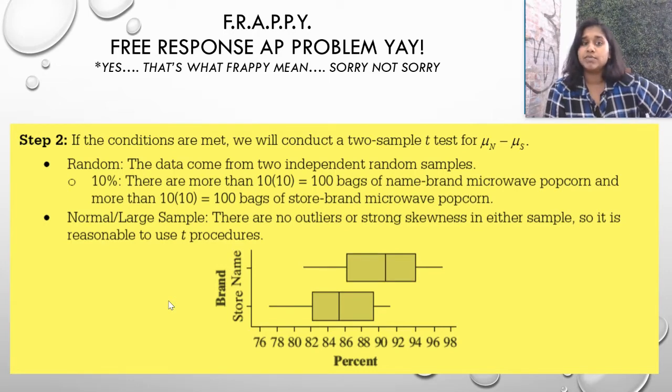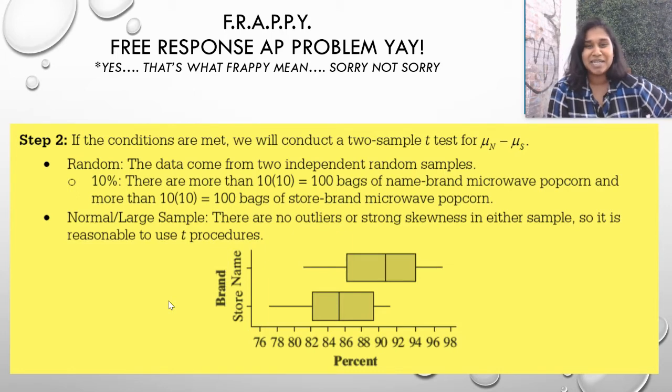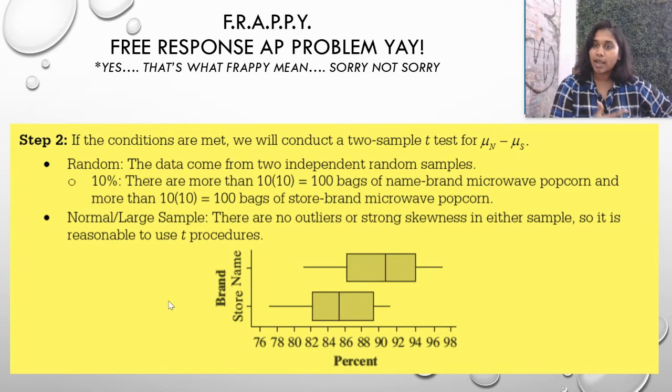10%: if I take the 10 bags that they did and multiply it by 10, then 100 bags of name brand or 100 bags of store-brand popcorn, probably we have a lot more than 100 in a grocery store or in an outlet or a warehouse or corporate company or et cetera, et cetera.